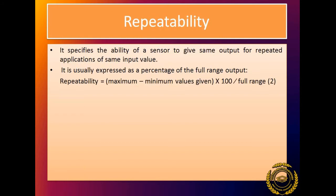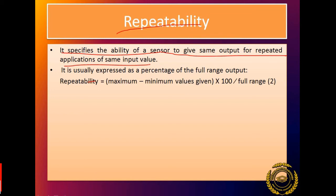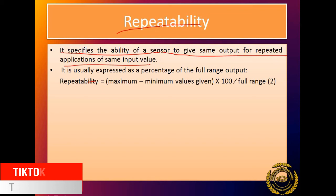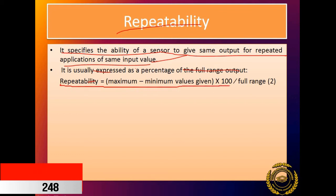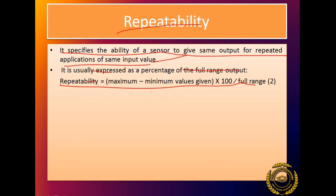Next is repeatability. Repeatability specifies the ability of the sensor to give the same output for repeated application of the same input value. If we give the same input repeatedly and get the same output each time, that ability of the sensor is called repeatability. It is expressed as a percentage of the full range output. The formula is: Repeatability = (Maximum value − Minimum value) × 100 / Full range.